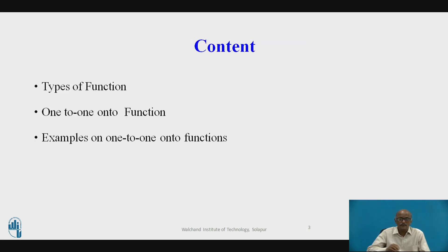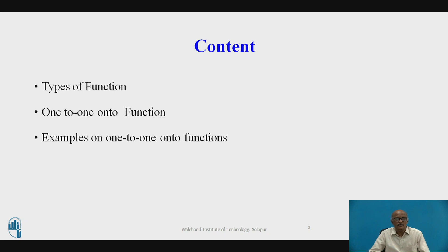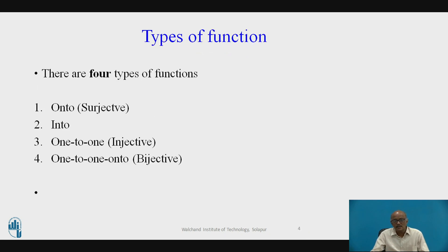The content of this video: we will first review what are the types of functions, then cover the one-to-one onto function definition, and see examples based on one-to-one onto functions. There are four types: onto (also called surjective), into, one-to-one (injective), and one-to-one onto (bijective).